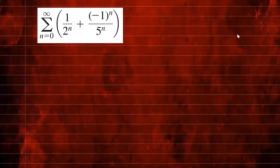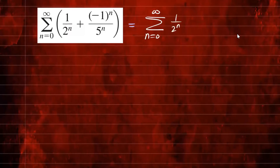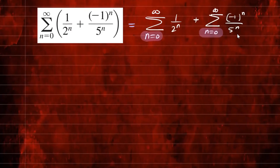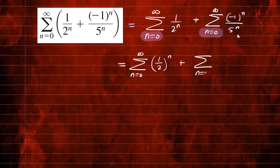Here's another geometric series given as a sum of two formulas. We split it into two summations. The first is the sum from n equals 0 to infinity of 1 over 2 to the n, and the second is the sum from n equals 0 to infinity of negative 1 over 5 to the n. Since both start at 0, we can directly identify a and r. For the first summation, a is 1 and r is 1 half. For the second, a is 1 and r is negative 1 fifth.